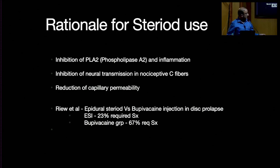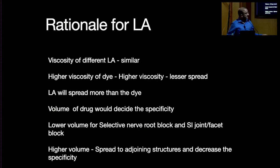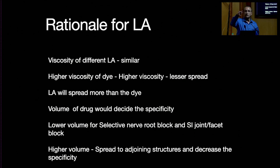The rationale for steroid use: in disc prolapse, patients receiving epidural steroid injection had only 23% requiring surgery, whereas the bupivacaine-only group required 67%. Regarding volume and specificity: local anesthetic spreads more than the dye due to its lower viscosity. A volume of 4 to 5 ml causes extensive spread, reducing specificity, so use lower volumes for selective nerve root, SI joint, or facet blocks.